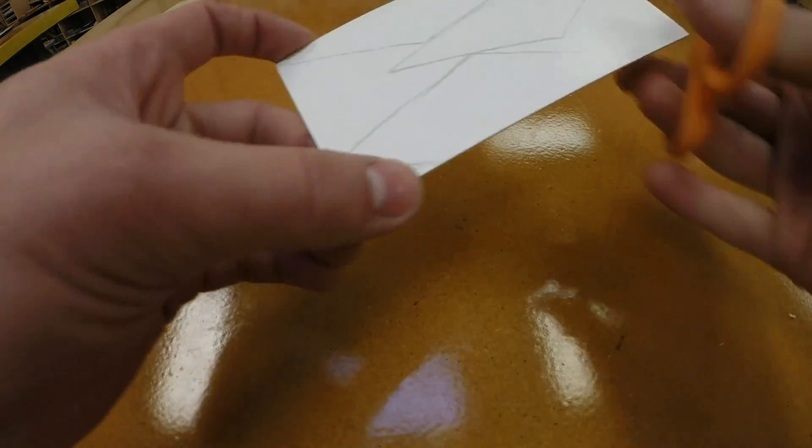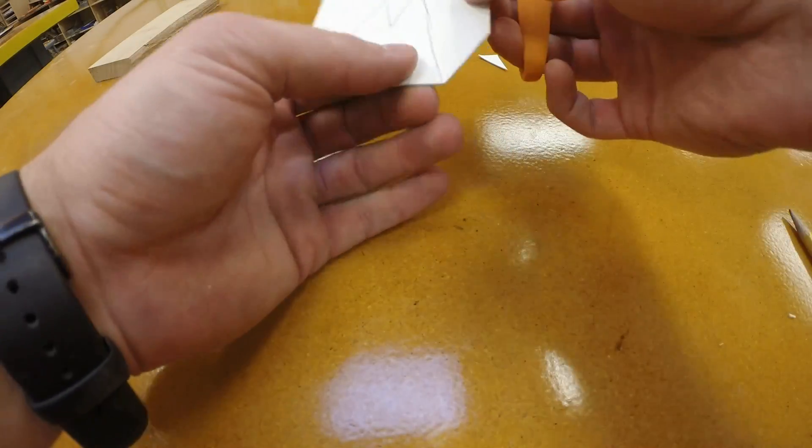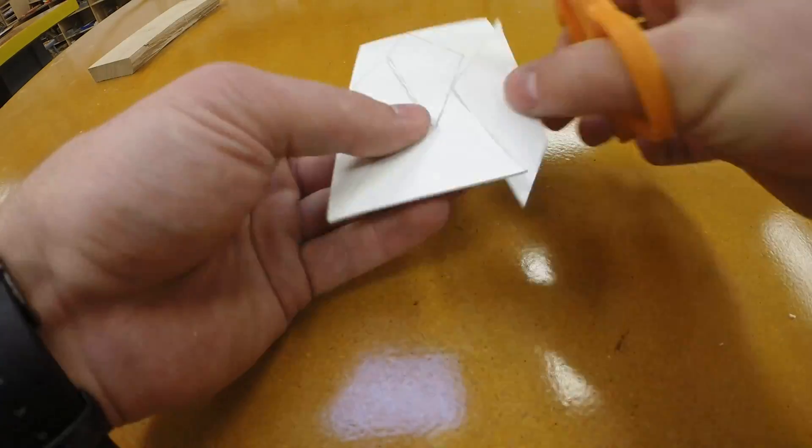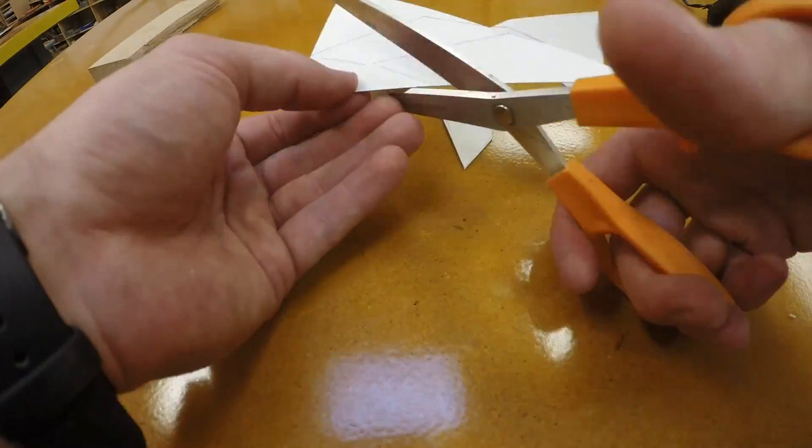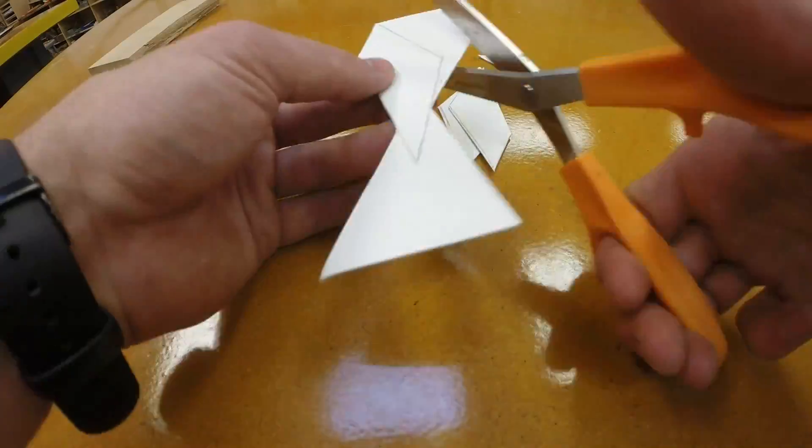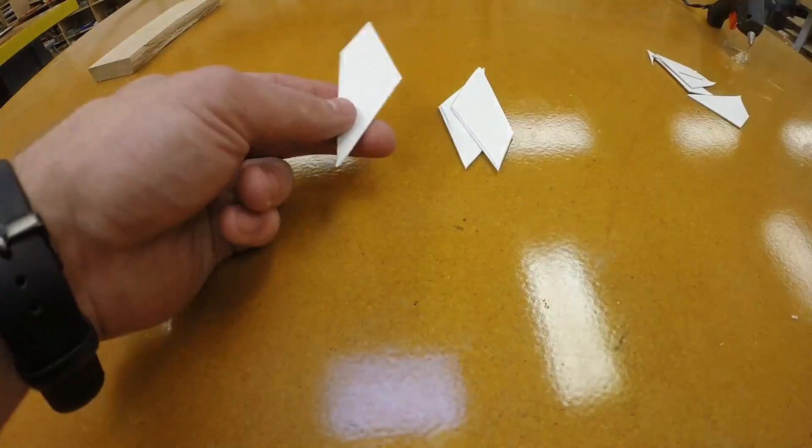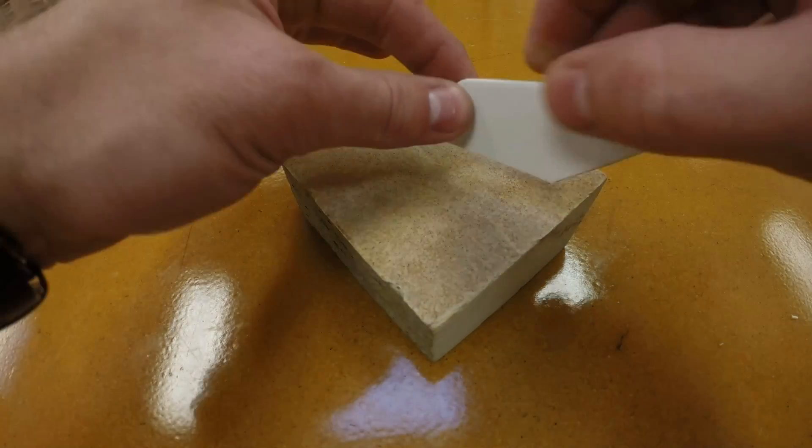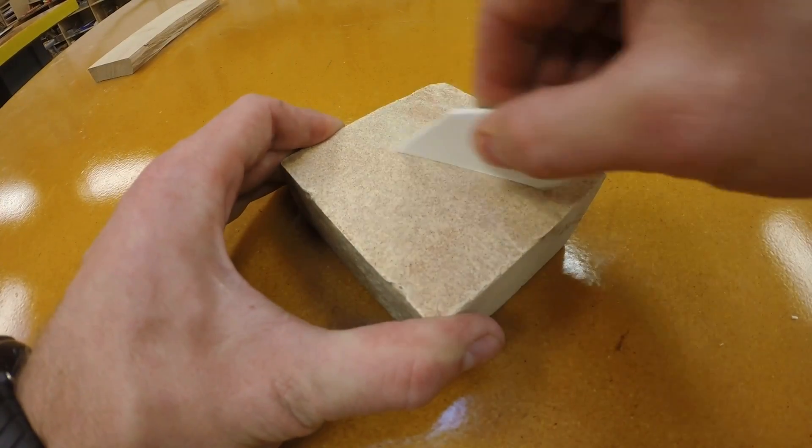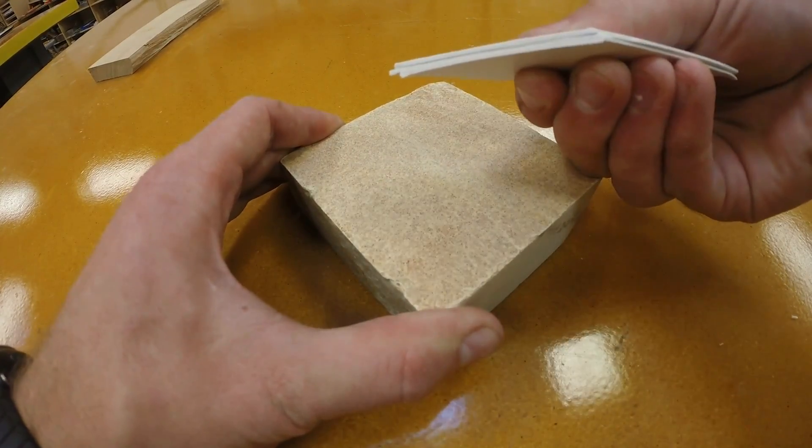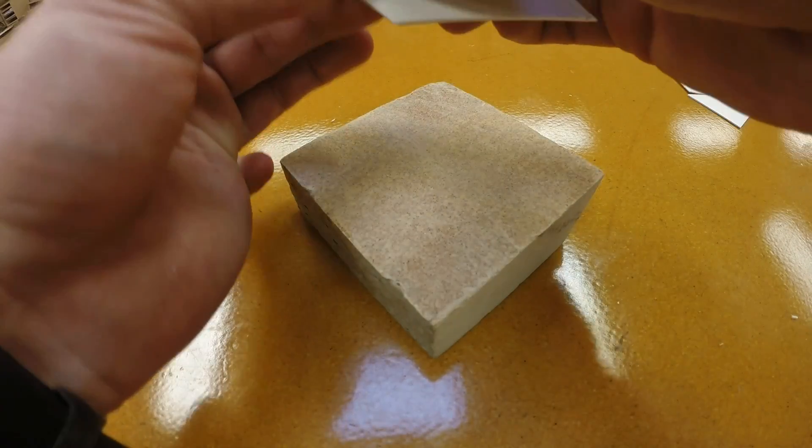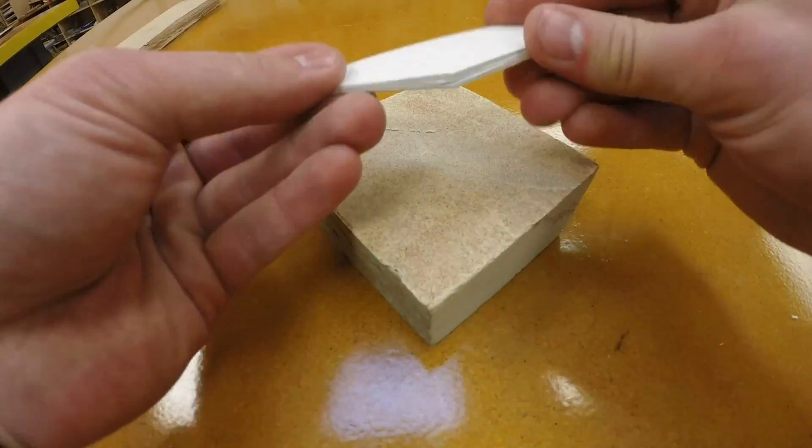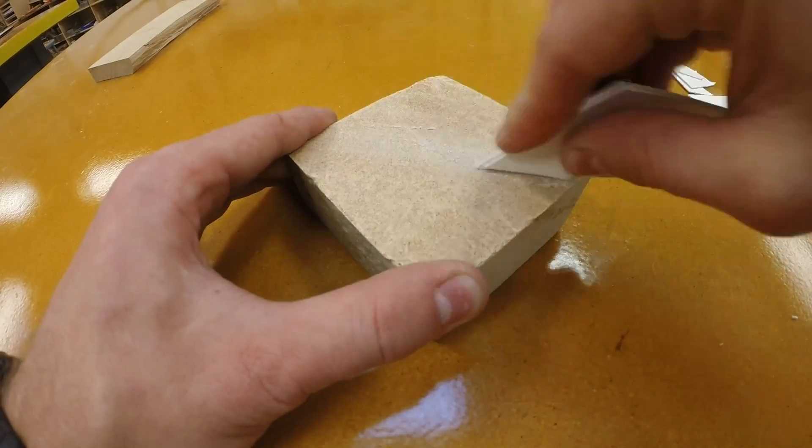Once they're all traced we can cut out the individual fins. Once all the fins are cut out try to line them up exactly and then you're going to run all three at once across the sanding block to even out all the edges. And by the time we're done with this, all four sides should be exactly even between the three fins.